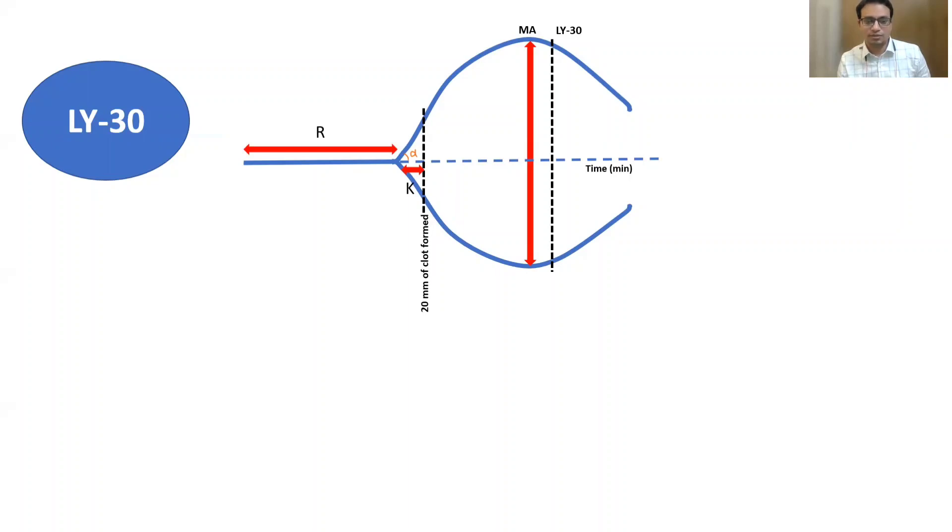After MA is achieved, maximum amplitude of clot is reached, then clot starts degrading. Then LY30 comes into picture, which is the measure of how much clot is broken. LY30 will increase in cases of hyperfibrinolysis, and in such cases tranexamic acid would be helpful.